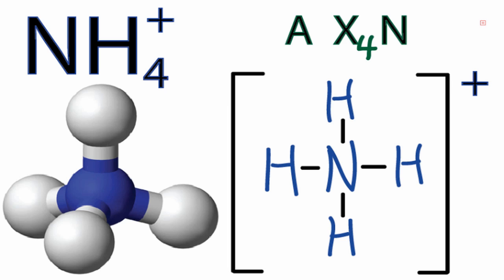And N, that's the number of non-bonding electron pairs. Well, all of the electron pairs between the nitrogen and the hydrogens are involved in chemical bonds, so we're going to ignore N right there.